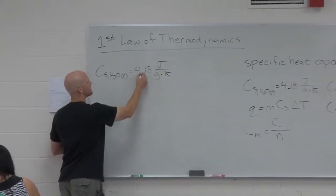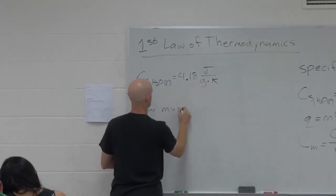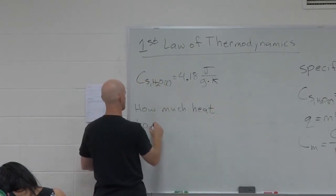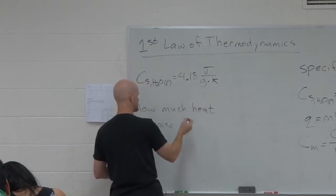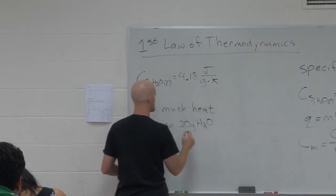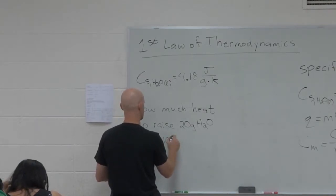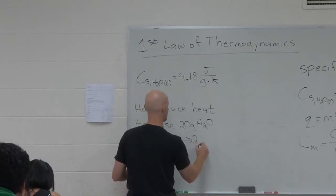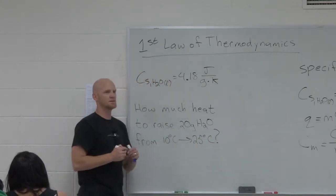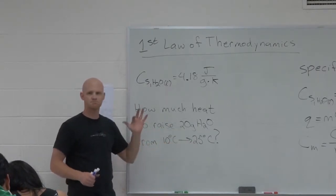So 4.18 joules per gram per kelvin. And so my question is, how much heat is required to raise 20 grams of water from 10 degrees Celsius to 25 degrees Celsius? That's the question. And we're told to assume this is the heat capacity of liquid water over that temperature range, 10 to 25.